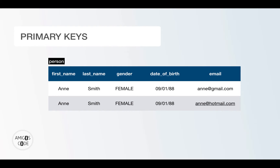Let's say that you have a table with two people, and those two people have the exact same column values for first name, last name, gender, date of birth, and email. You can see in this table you have two women called Anne Smith with the same date of birth and an email which is almost the same, apart from the domain — one with Gmail and the other with mail.com.